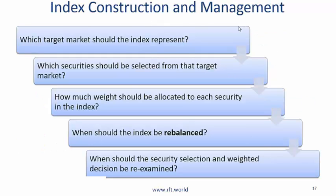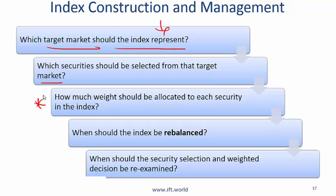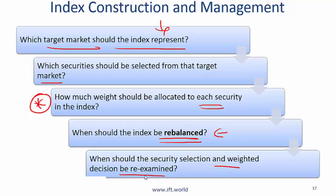Index construction and management involves several steps. First, identify which target market the index should represent — for example, US stocks. Then, decide which securities to select from that target market. Next, determine how much weight to allocate to each security: weighting can be based on price, market capitalization, or equal weighting. Finally, determine when to rebalance the index and when to re-examine security selection and weighting decisions — in many indices this is re-examined every six months.